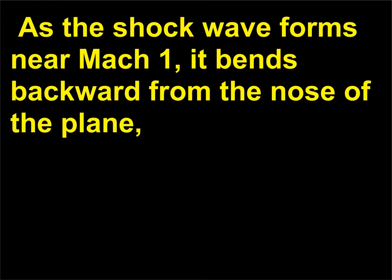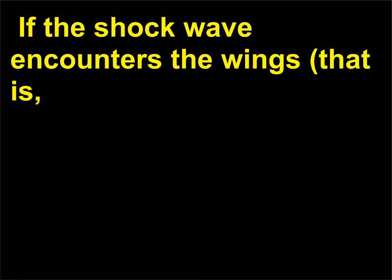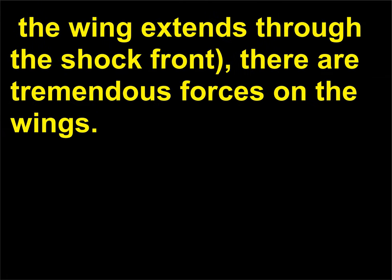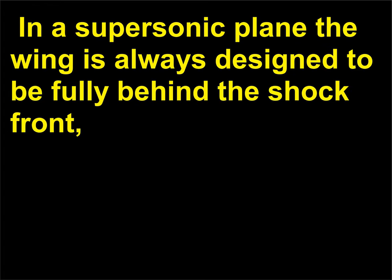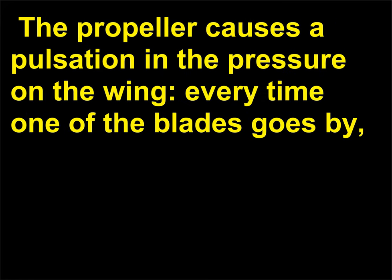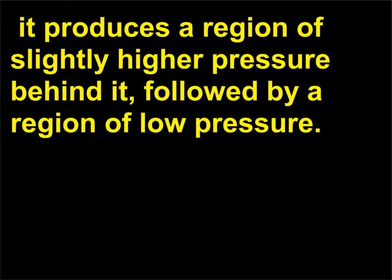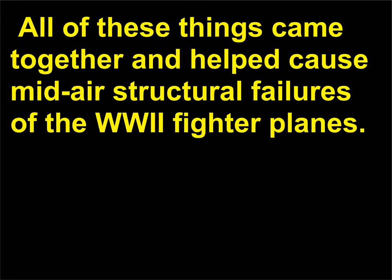As the shockwave forms near Mach 1, it bends backward from the nose of the plane like a bow wave on a boat. If the shockwave encounters the wings, that is, the wing extends through the shock front, there are tremendous forces on the wings. In a supersonic plane the wing is always designed to be fully behind the shock front because the shock front can tear the wing off the plane. The propeller causes a pulsation in the pressure on the wing, every time one of the blades goes by. It produces a region of slightly higher pressure behind it, followed by a region of low pressure. All of these things came together and helped cause mid-air structural failures of the World War II fighter planes.